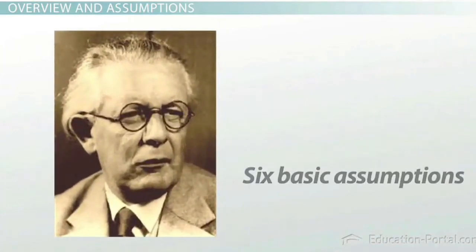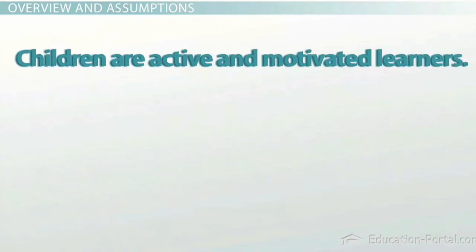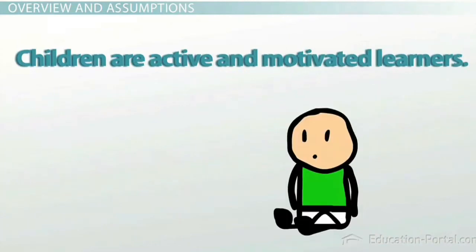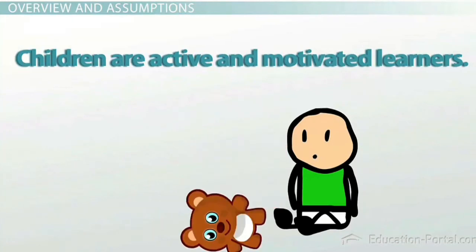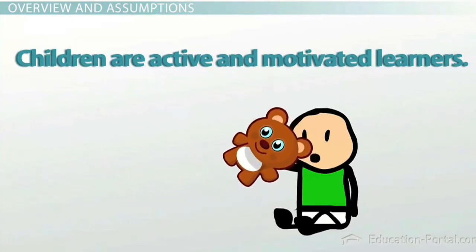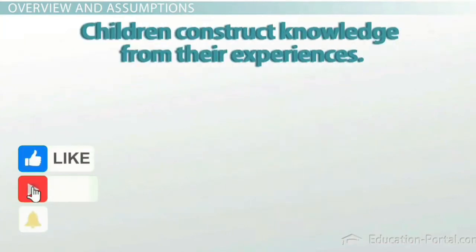Piaget's theory of cognitive development has six basic assumptions. The first is that children are active and motivated learners — they will seek out information to help them make sense of their world. For example, a child may encounter a new toy. Instead of passively observing it, the child will engage with it, possibly dropping it, touching it, or even tasting it to learn more about what it is and what it does.